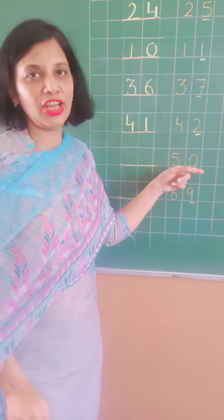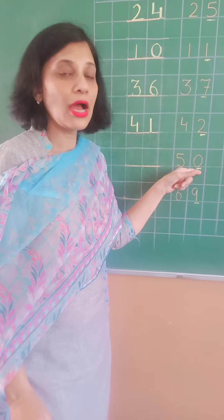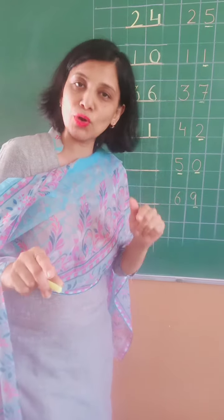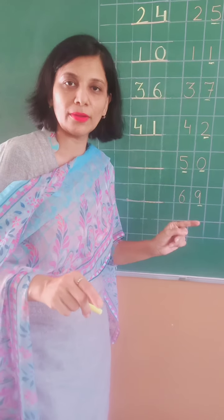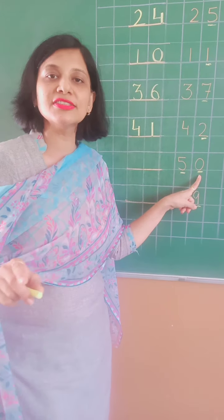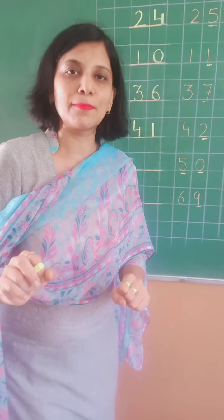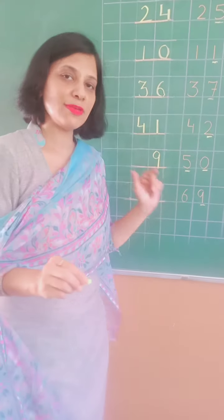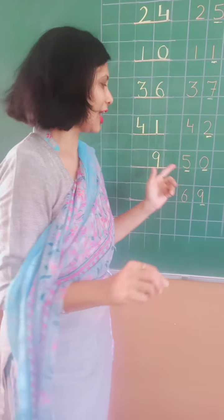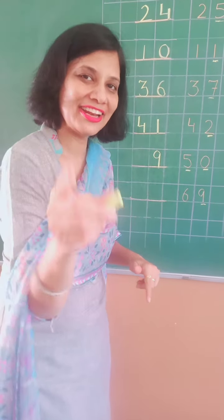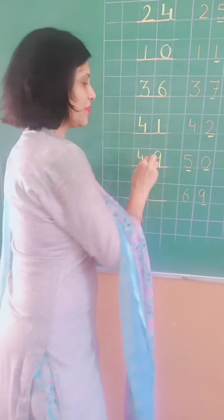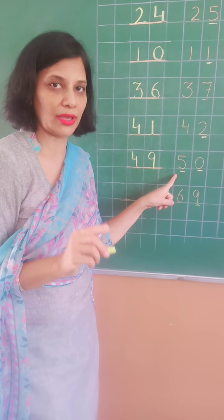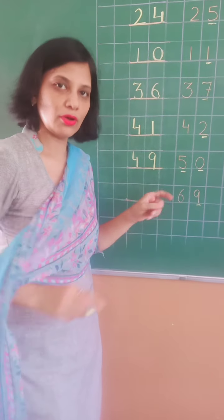Now the number is 50. Yahan aapne first digit nahi dekhna — aapne dono digits dekhne hain. Jab 0 aata hai, toh aapne dono digits change karengi. First digit kya hai? Zero — we will consider it as 10. 10 se pehle kya aata hai? 9. So we write 9. Then 5 se pehle kya aata hai? 4. Toh kya bana? 50 se pehle 49. Jahan bhi 0 aata hai, wahan dono digits change hongi — dono digits check karo.